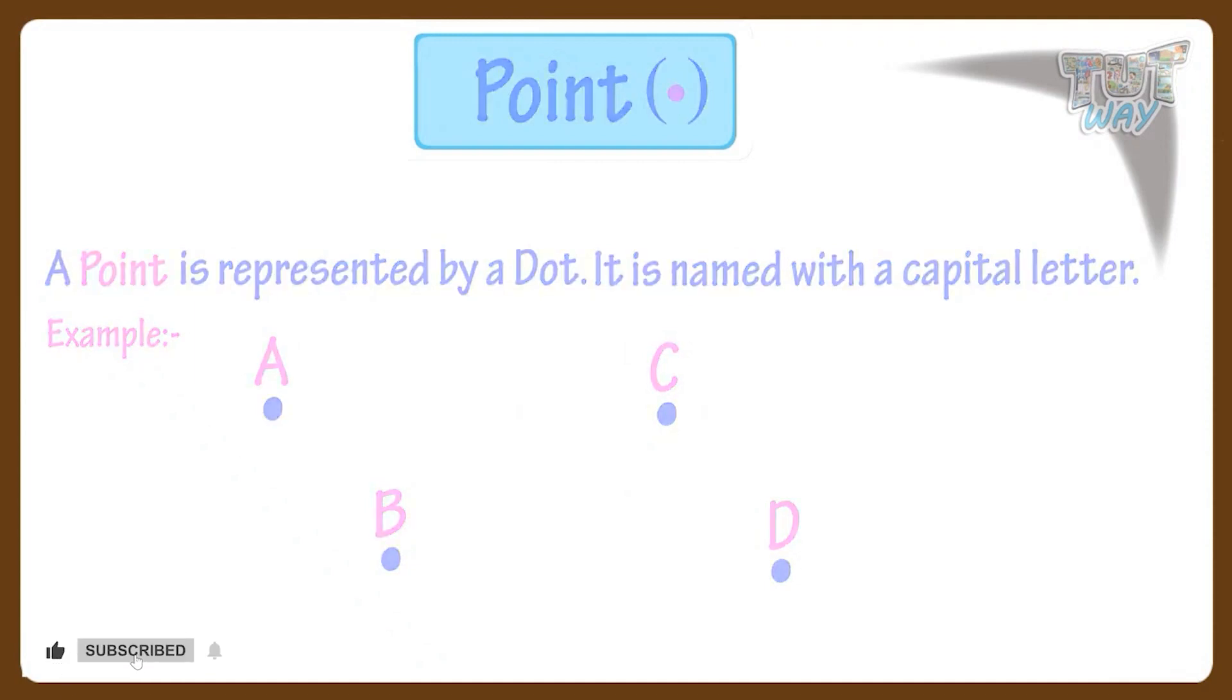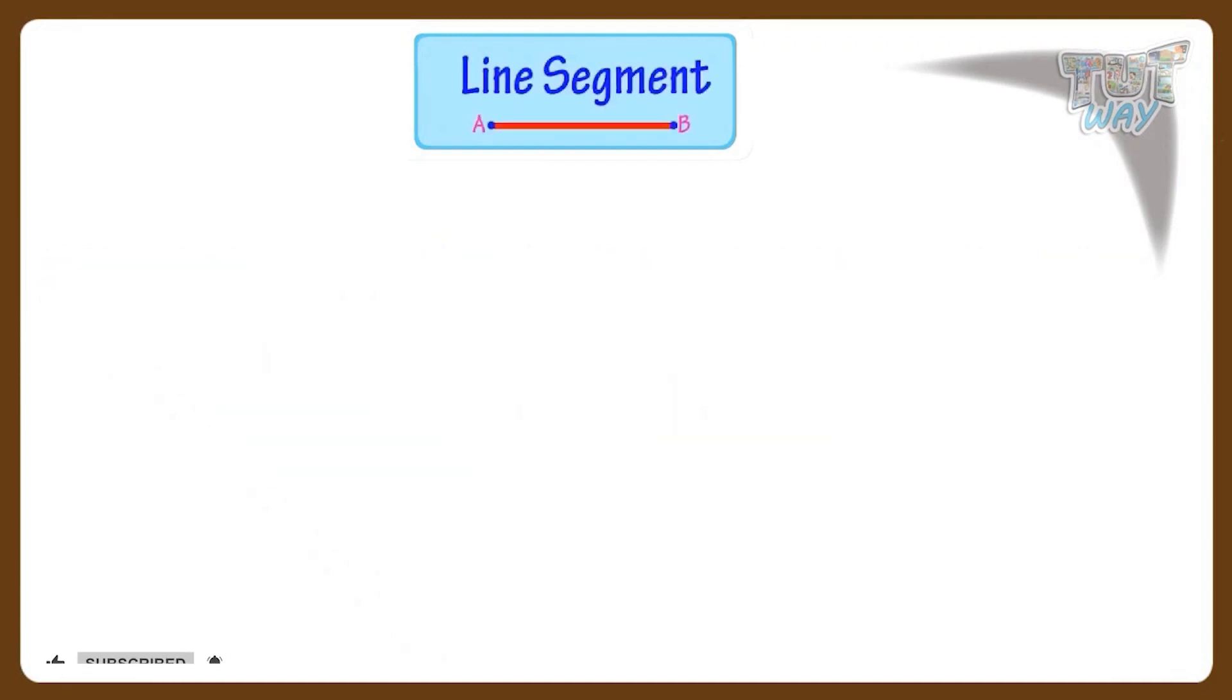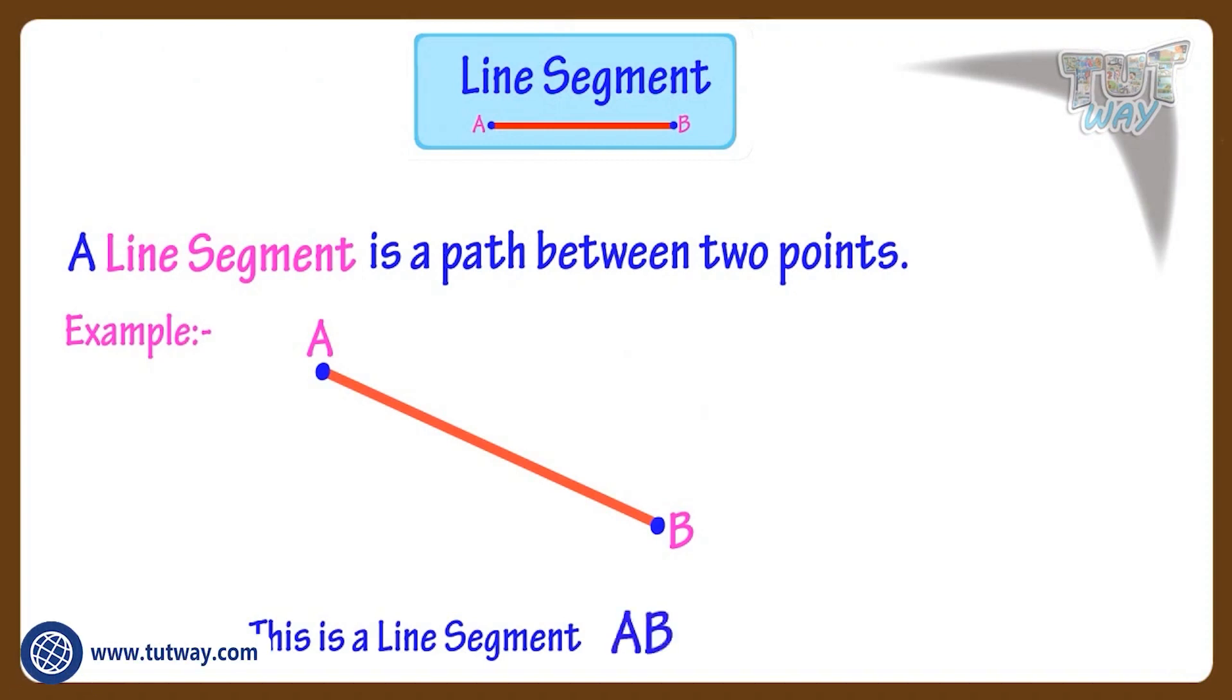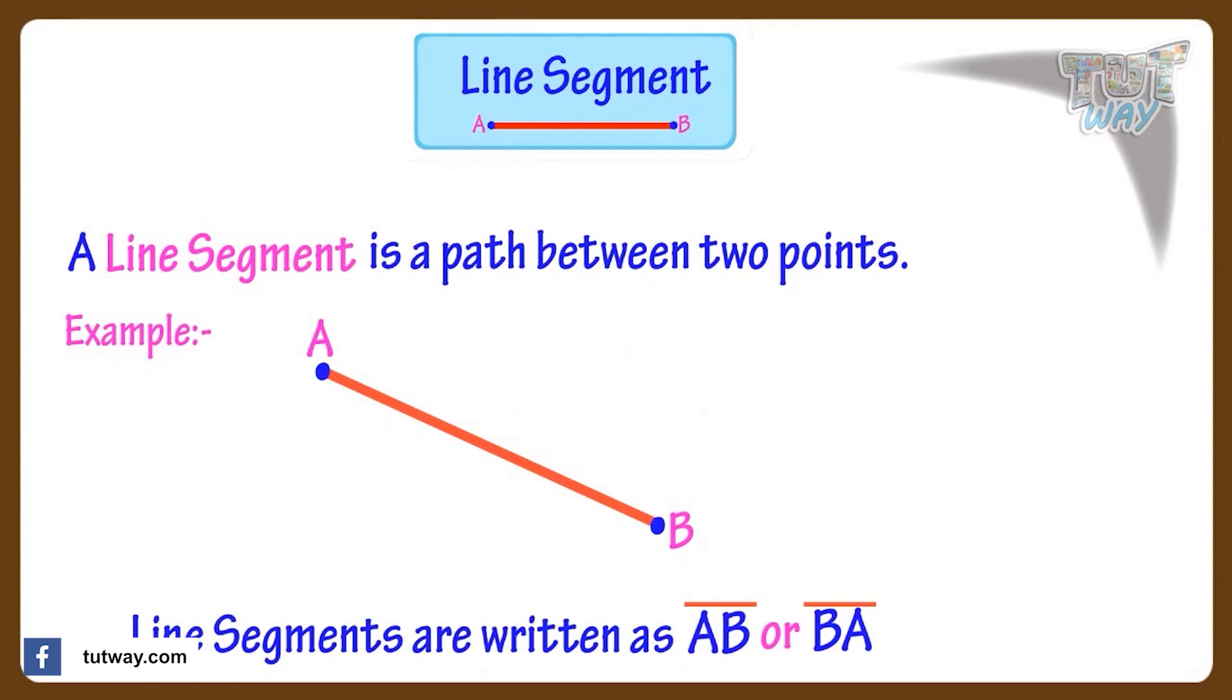Now, let's see what is a line segment. A line segment is a path between two points. Example, this is line segment A, B or B, A. Line segments are represented like this. That is, a bar above the line name.